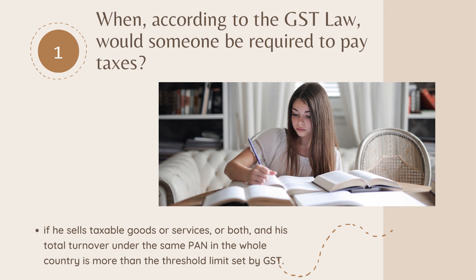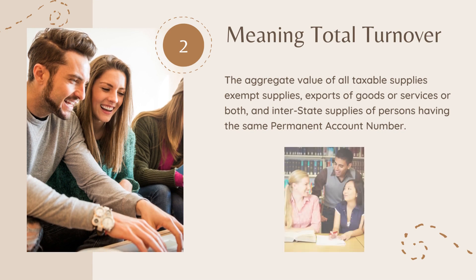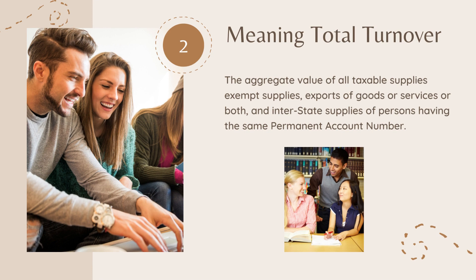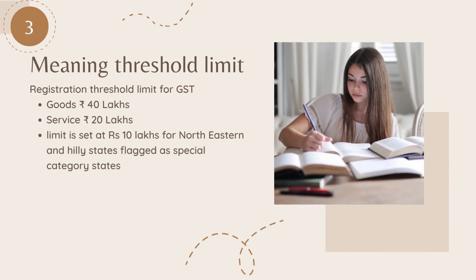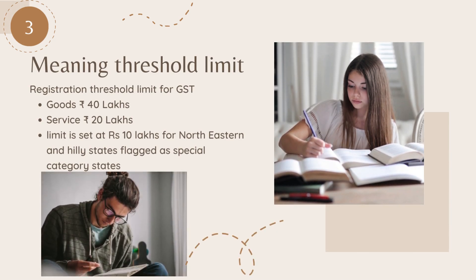If he sells taxable goods or services, or both, and his total turnover under the same PAN in the whole country is more than the threshold limit set by GST. Total turnover means the aggregate value of all taxable supplies, exempt supplies, exports of goods or services or both, and interstate supplies of persons having the same permanent account number. Registration threshold limit: for goods, 40 lakh rupees; for services, 20 lakh rupees. The limit is set at 10 lakh rupees for Northeastern and hilly states flagged as special category states.